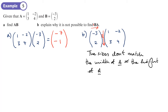Unlike normal numbers, with matrices you can't always swap them around and get the same answer — matrix multiplication is not commutative. Sometimes when you swap them around and you can multiply them, you still don't get the same answers.